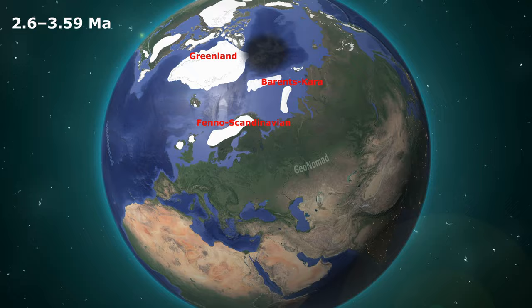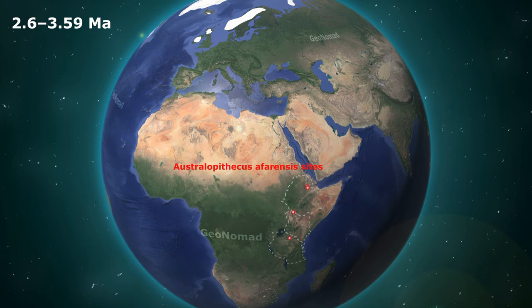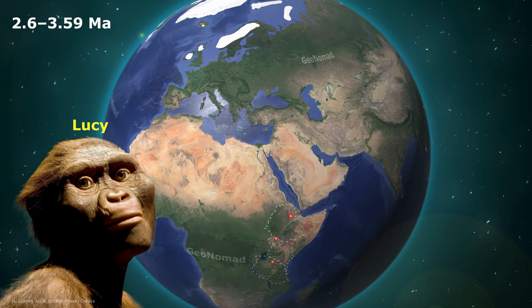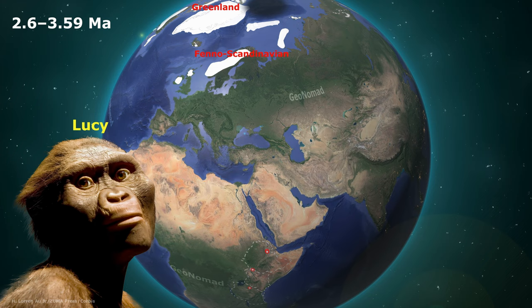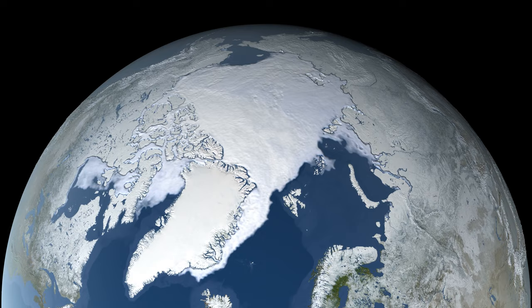Australopithecus afarensis, popularly known as Lucy, lived in northeast Africa. Lucy is believed to be the common ancestor of the extant genus Homo, and would have had to adapt to the cold with the start of the quaternary glaciation.